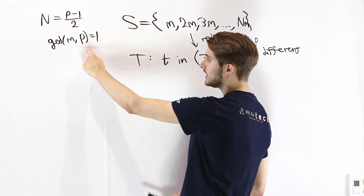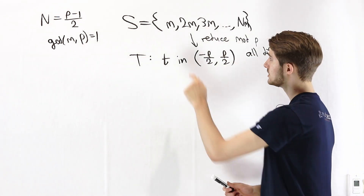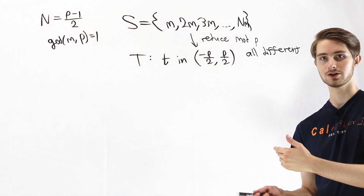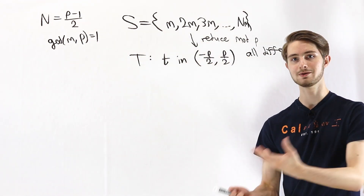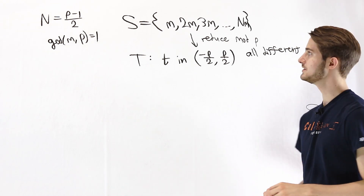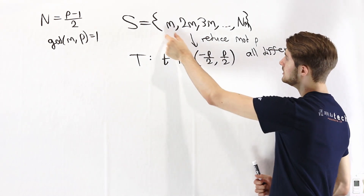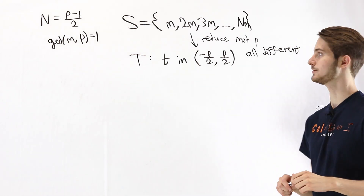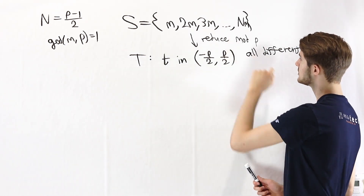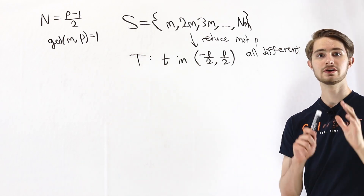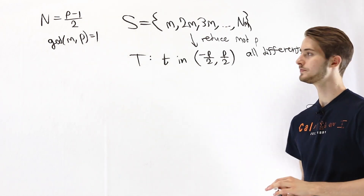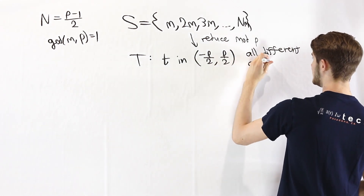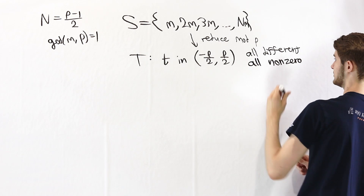Additionally, we know that m is not a multiple of p. And since all of the coefficients here, 1 up to p minus 1 over 2, are all less than p, none of them are going to be multiples of p either. That means that when we multiply them together, none of these numbers in S could be a multiple of p, because they don't have a factor of p anywhere. If we reduce them mod p, that means that they're not going to be equal to 0. So the elements of T are all going to be non-zero.